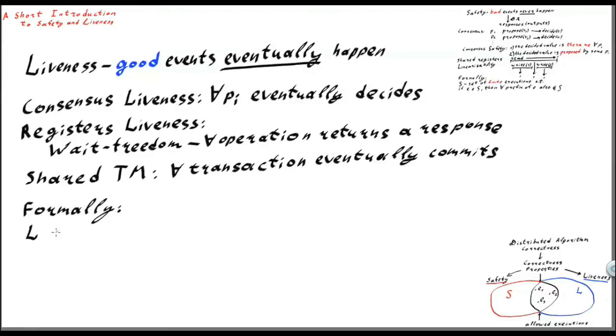Formally, a liveness property L is a set of executions such that every finite execution is allowed by L.